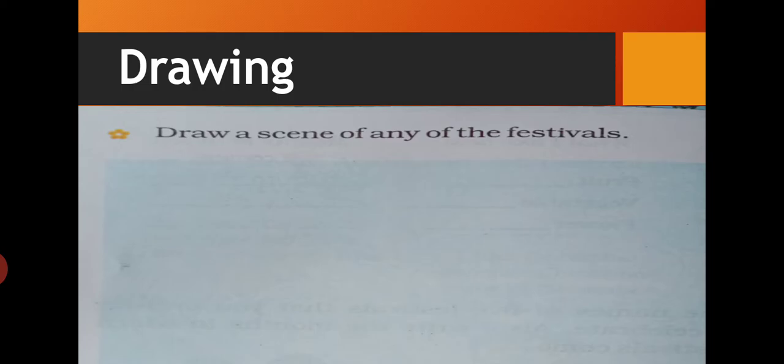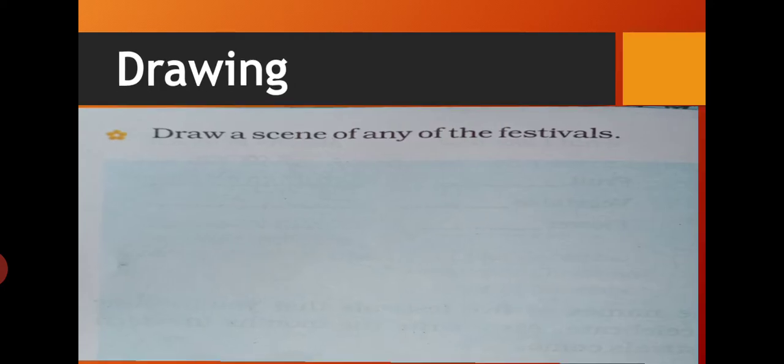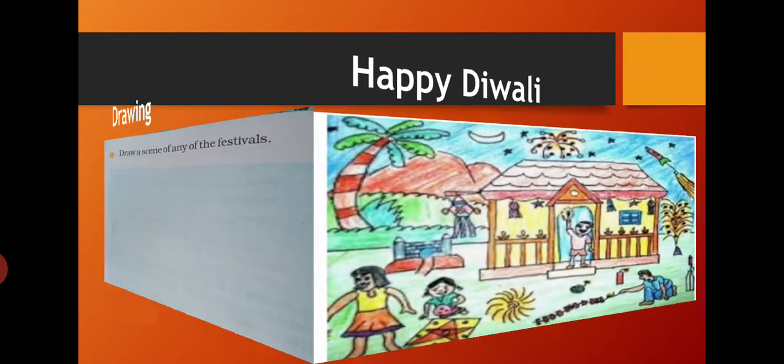A drawing is there in your book. Draw a scene of any of the festivals which you like the most. A space is provided in your book. You can draw the scene of any of the festivals in this space. In this way you can draw it.